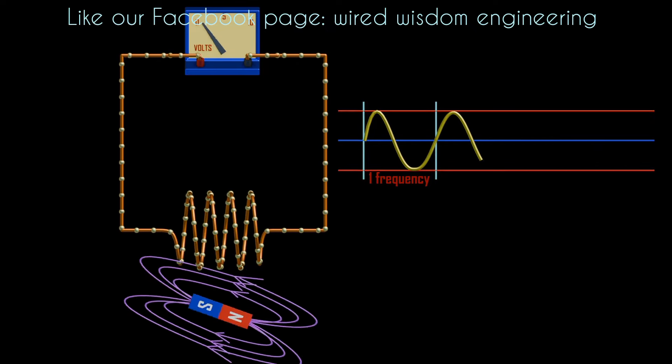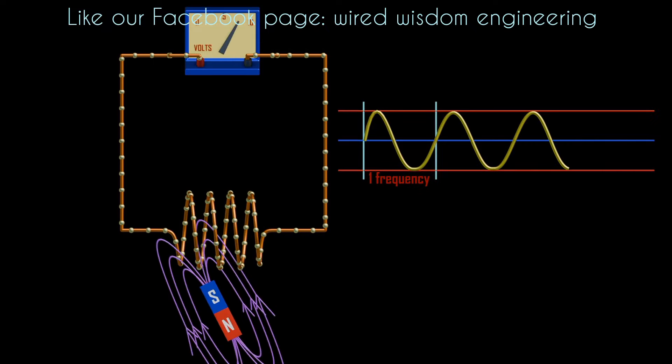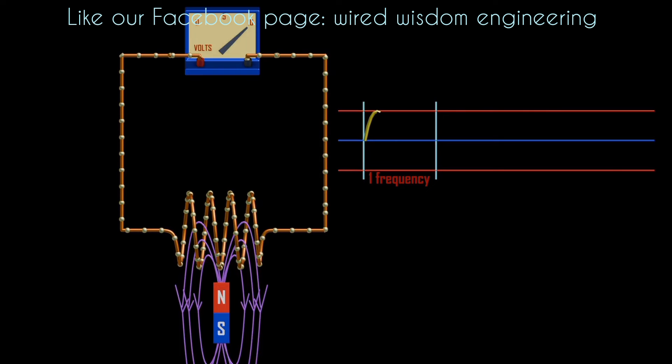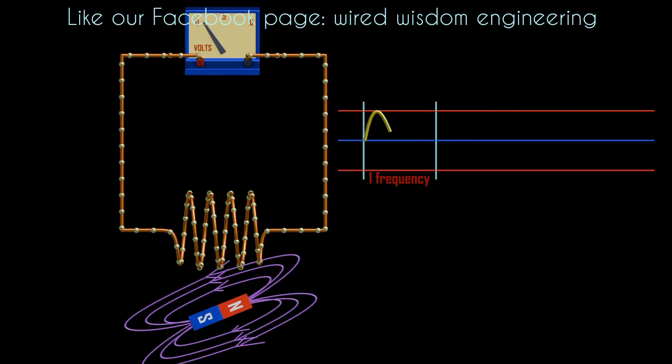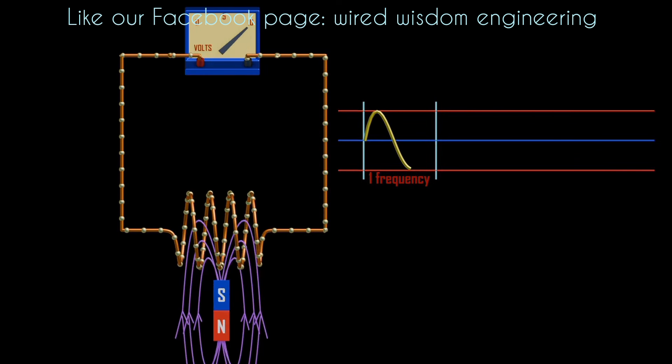When we use, for example, a permanent magnet, and it cuts the coil while rotating, it will form an alternating current. For instance, we know that the magnetic strength of a magnet is stronger at the pole. So when the south pole of a magnet is approaching, the current gradually increases to the maximum.